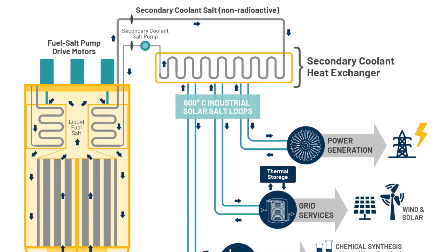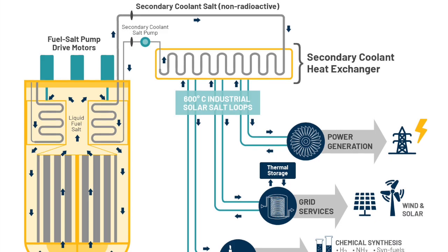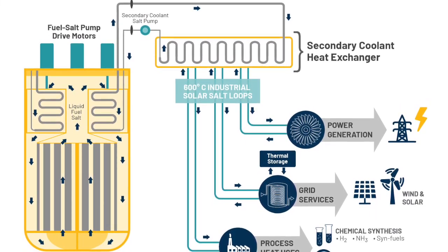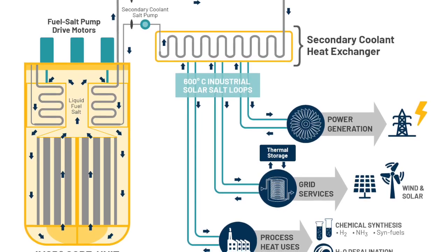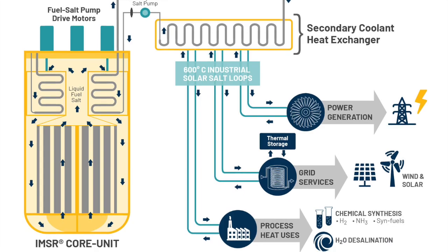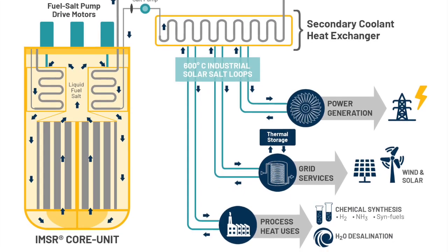This is a small modular reactor, or SMR, design with a self-contained replaceable core capable of generating 190 MW. Unlike many previous MSR designs, the IMSR is a denatured salt design that operates purely as a burner reactor without any breeding capability.